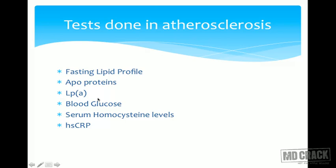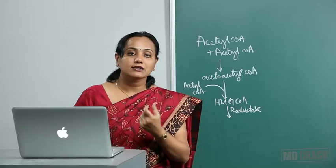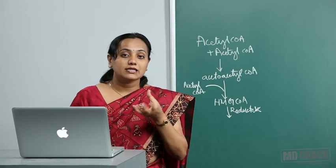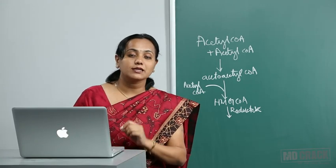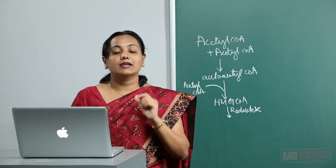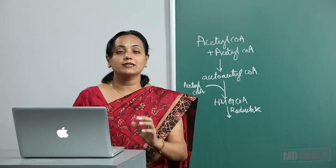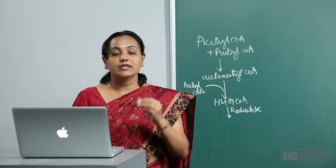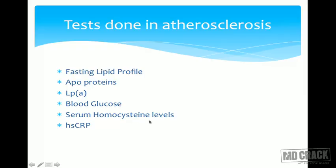Other tests include fasting blood glucose and plasma glucose levels. Serum homocysteine levels are also measured because homocysteine can attack LDL and change it — producing oxidized LDL. Remember, LDL as such is not atherogenic; it is the modified LDL that is atherogenic, which is why serum homocysteine estimation is important.